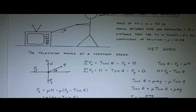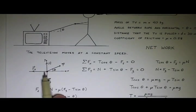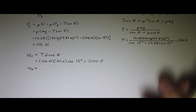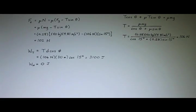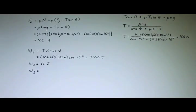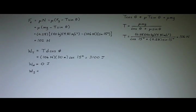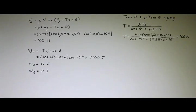The work done by the normal force: the normal force points vertically and the displacement is along the x-axis, so the angle between them is 90 degrees, and cosine of 90° is zero — that's zero joules, don't even have to calculate it. And the work done by the weight: the weight points down and the displacement points along the x-axis, so again that's also zero joules.